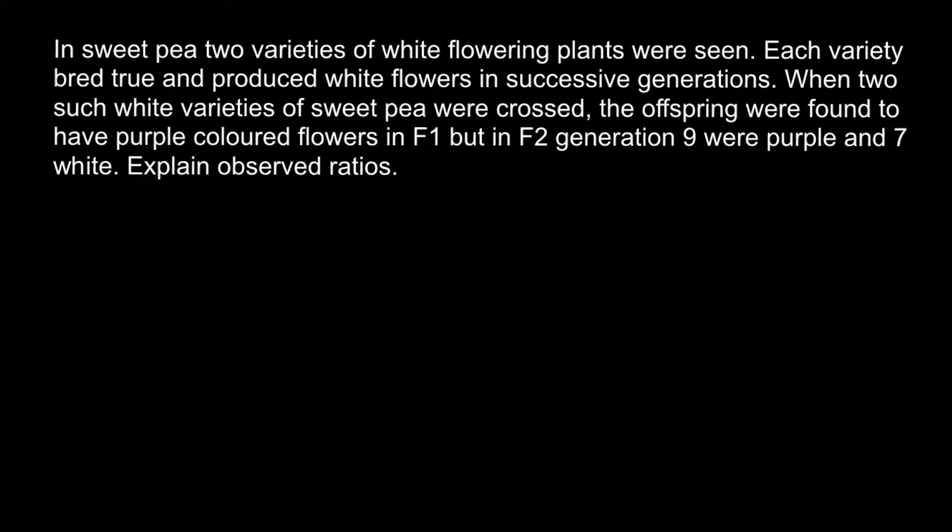Hello and welcome to Nikolai's genetics lessons. Today's problem: in sweet pea, two varieties of white flowering plants were true breeding, producing white flowers in successive generations. When these two white varieties were crossed, the offspring had purple colored flowers in the F1 generation, but in the F2 generation nine were purple and seven were white. Explain the observed ratios.